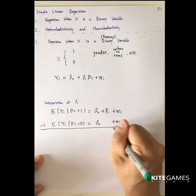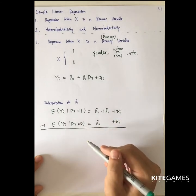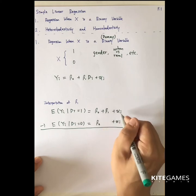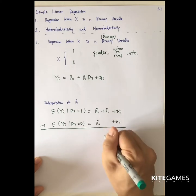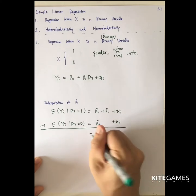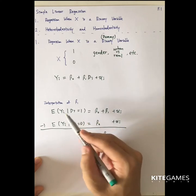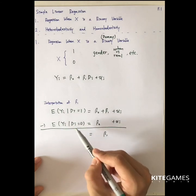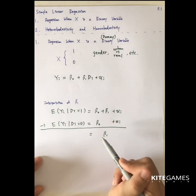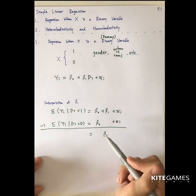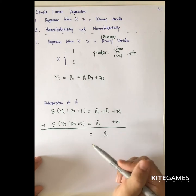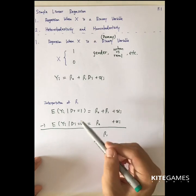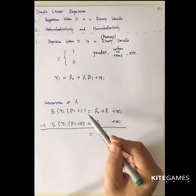Then you do a subtraction. Beta 0 minus beta 0 is 0, and u_i minus u_i cancels, leaving just beta 1. On the left-hand side, we have the expected value of y given d_i equals 1, minus the expected value of y given d_i equals 0. That means beta 1 represents the change in the average value of y when d_i increases from 0 to 1.